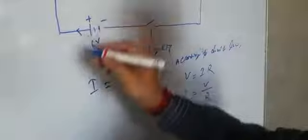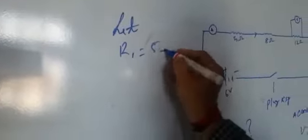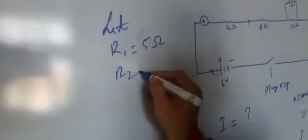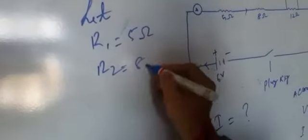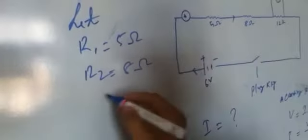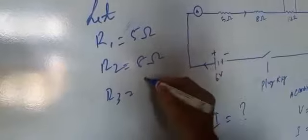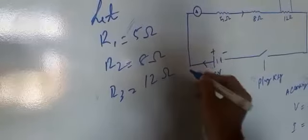There are three resistors: let R1 equal 5 ohms, R2 equal 8 ohms, and R3 equal 12 ohms.